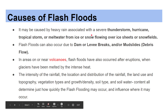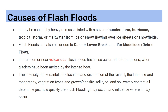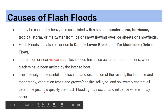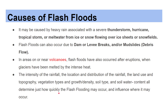What are the causes of flash floods? Flash floods may be caused by heavy rain associated with severe thunderstorms, hurricanes, or tropical storms, or melt water from ice or snow flowing over ice sheets or snowfields. Flash floods can also occur due to dam or levee breaks and mudslides. In areas near volcanoes, flash floods have occurred after eruptions when glaciers were melted by intense heat.